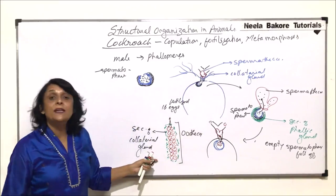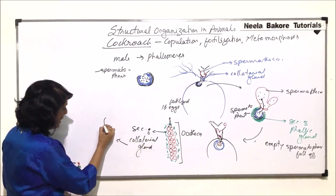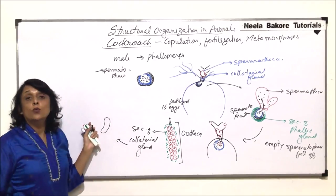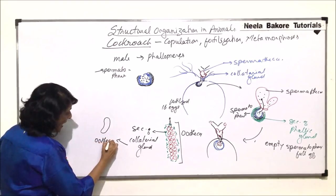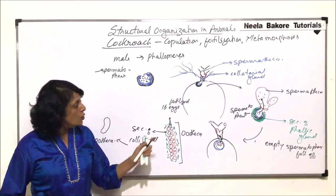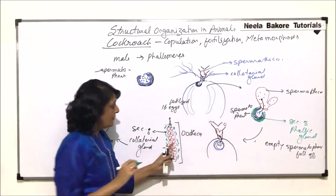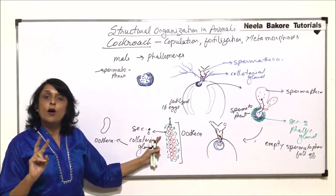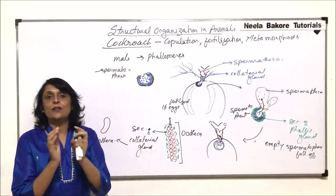The ootheca is shaped by the ovipositors. It has a concave side from where the ootheca will rupture when the nymphs hatch out of it. These ootheca are deposited in damp and dark places using the ovipositors. The ootheca contains 16 fertilized eggs in two rows of eight each, and the secretion of the collateral gland hardens to complete this structure.